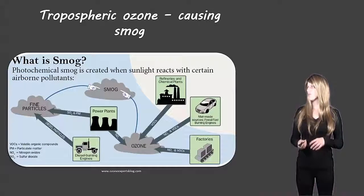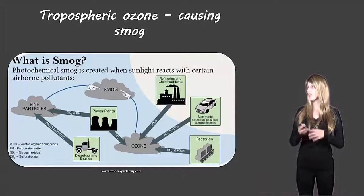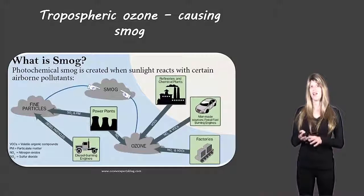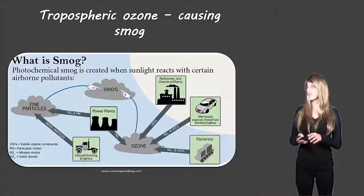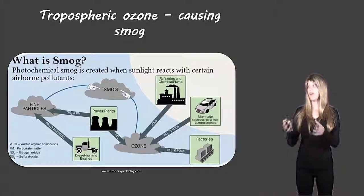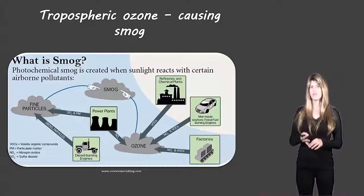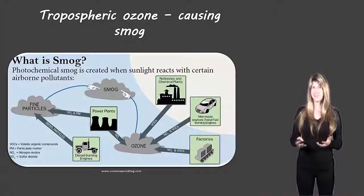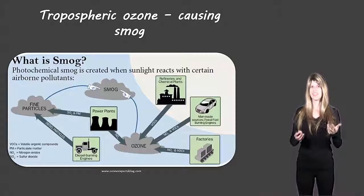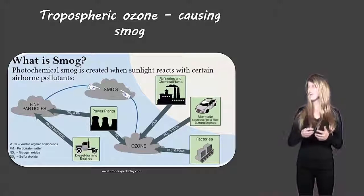So how does this happen? Well, we can see that factories, vehicles, refineries, power plants, all of these things produce the nitrous oxides and the volatile organic compounds that create the ozone and then other things like engines and power plants produce fine particulate matter. And that particulate matter along with the ozone combines together to create the smog, especially when it's heated together under the sun.